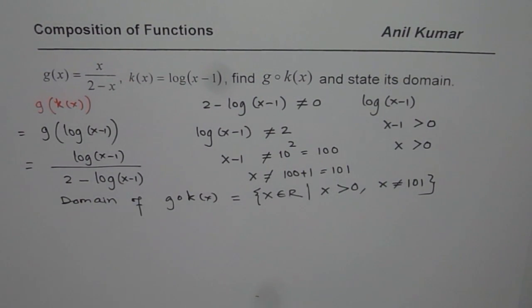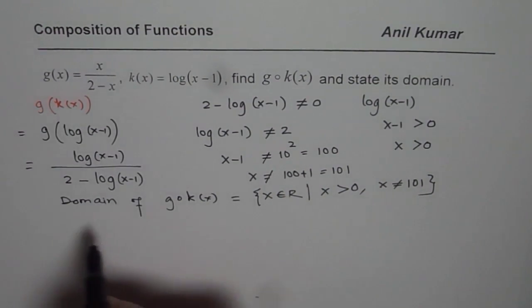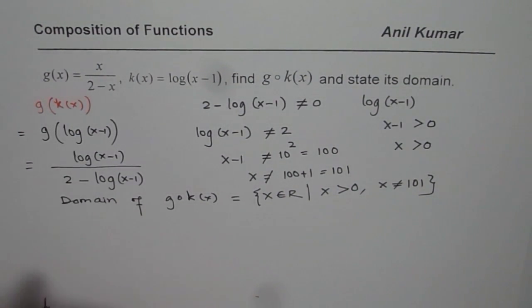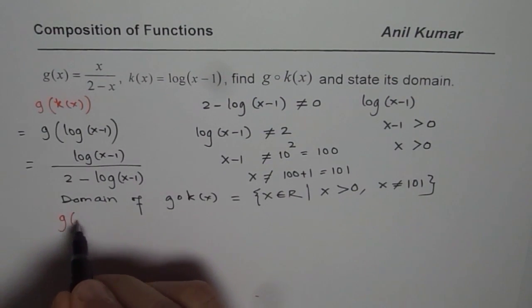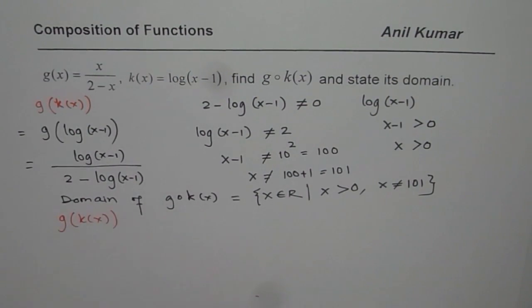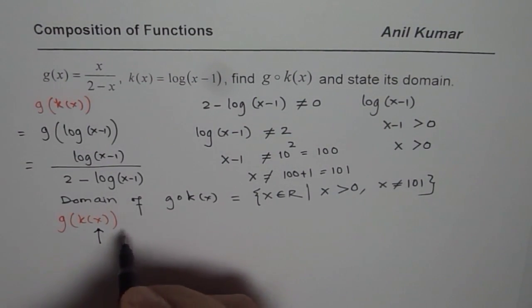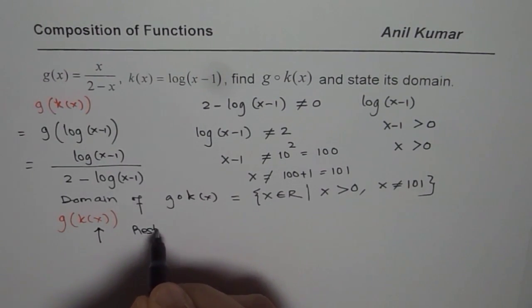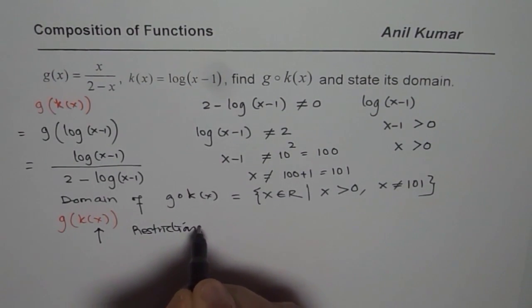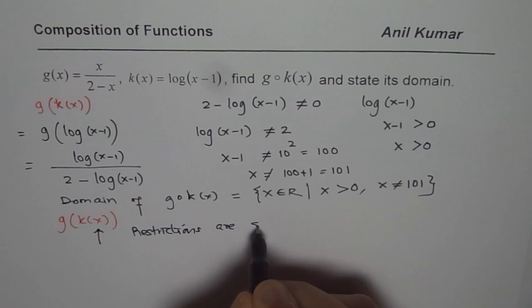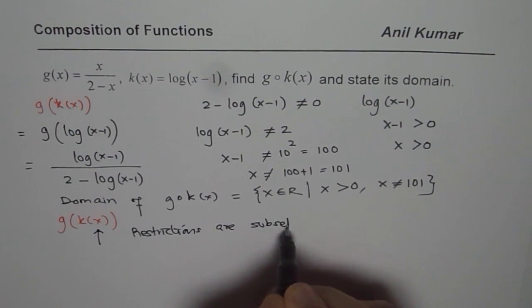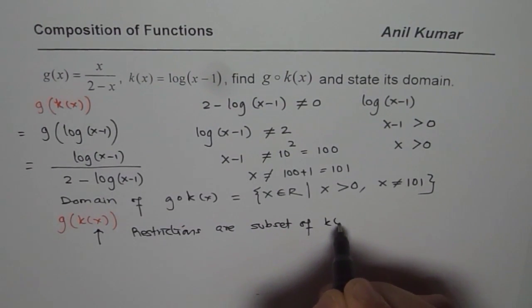Now let me explain you how can you get restriction of this function even without finding the function itself. So we are looking for g(k(x)). So first step is find, so the superset. So the restrictions are, now in this case, restrictions are subset of k(x). That is first thing.